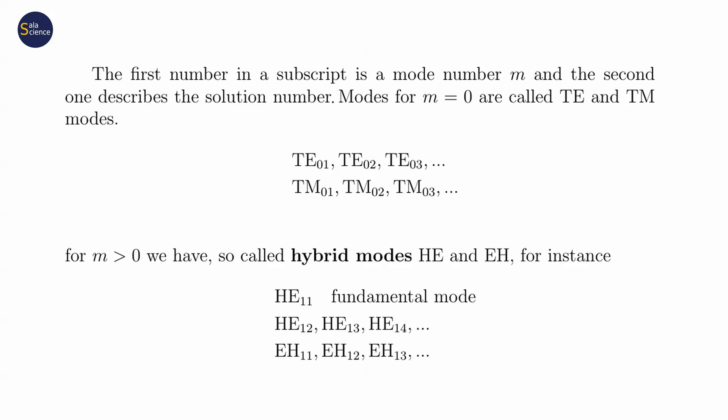The difference between HE and EH comes from the ratio between the longitudinal components of the electric and magnetic fields. The second number is still a solution number corresponding to the subsequent propagation constants.